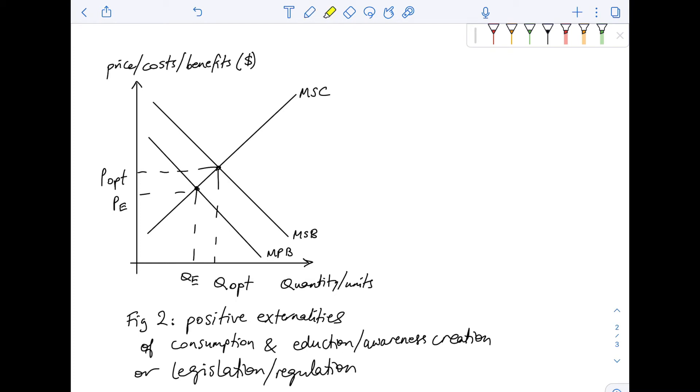You've got the market providing QE and charging PE, when it should be providing QOPT and charging POPT. So what education awareness creation as well as legislation regulation would do is that they would increase the demand. So the MPB would shift to the right, closer to the MSB from MPB to MPB.